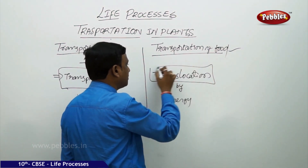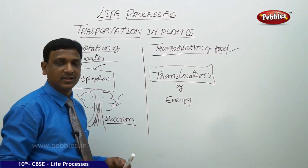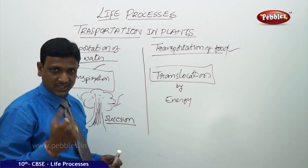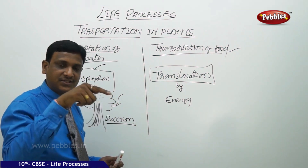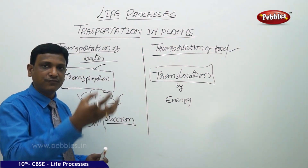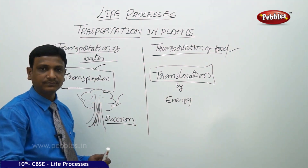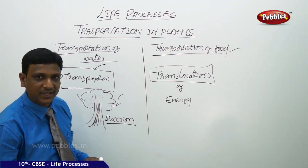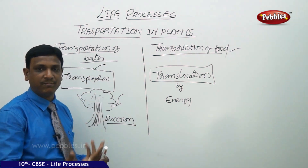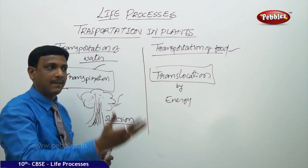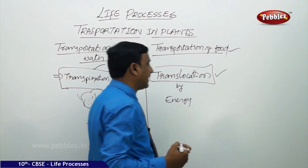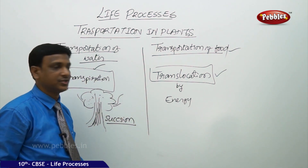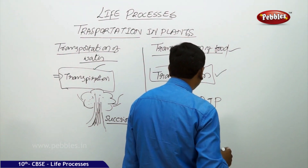The transport of food is called translocation. Unlike water transport, food is not always moved in one direction — sometimes it goes to the top parts, sometimes to the bottom parts. For example, food prepared in the leaves may be transported downward to be stored in the roots, as in carrots, or transported upward to a bud when the plant is blooming. This bidirectional translocation cannot be done by simple physical forces. Energy in the form of ATP must be spent for translocation.